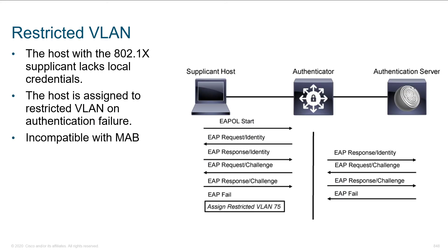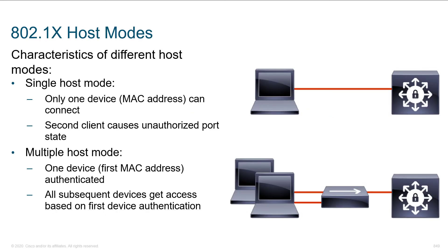A restricted VLAN is what you use when somebody authenticates with bad credentials. The client sends an EAP start, we ask who they are, they tell us, we punt it to RADIUS, RADIUS says no. They try again, it says no again. Since they have failed to authenticate, we dynamically assign this port to a restricted VLAN. Once in that restricted VLAN, they may be able to do certain limited things — it's up to the administrator.